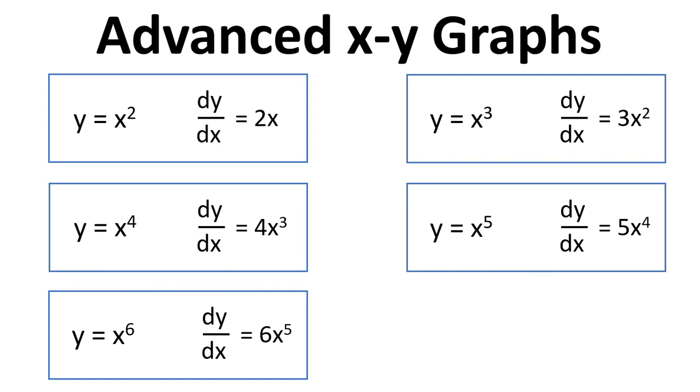And what we like to do in science and maths and engineering is to make generalisations. So if we have y equals x to the n, so just a number, then this rule, what we see from this pattern is that dy by dx equals n times x to the power of n minus one.